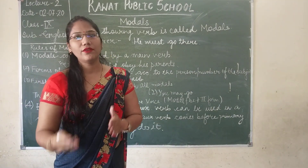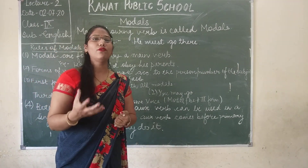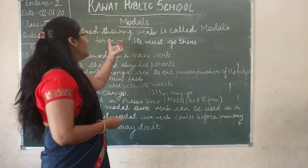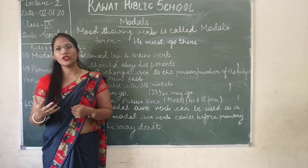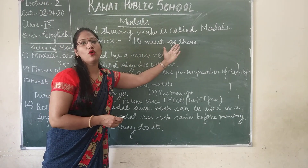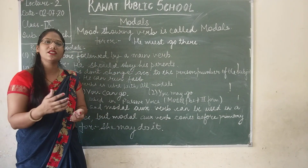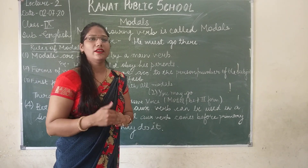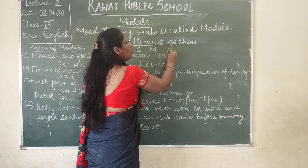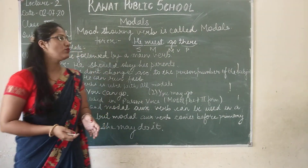Each of these has different uses, which we will discuss later. First, we will start with the general definition — mood-showing verbs are called modals. For example, 'he must go there.' Here 'he' is the subject, 'must' is the modal, 'go' is the main verb, and 'there' is the object.